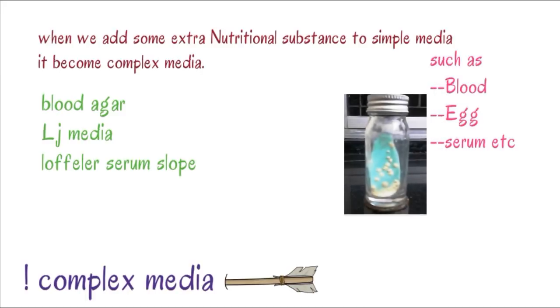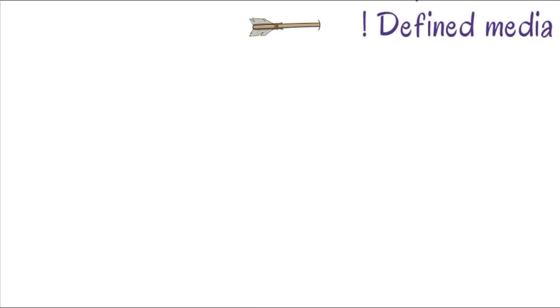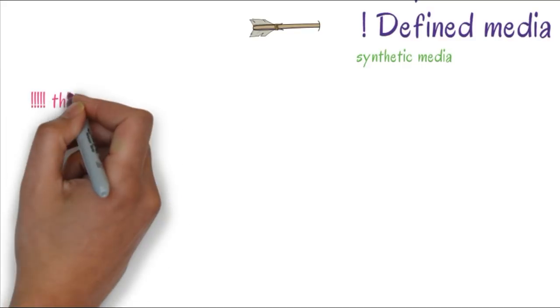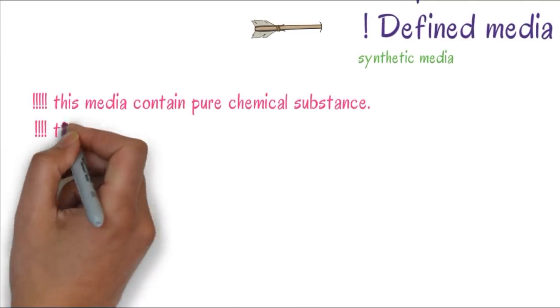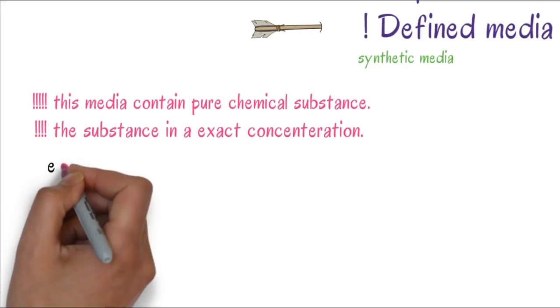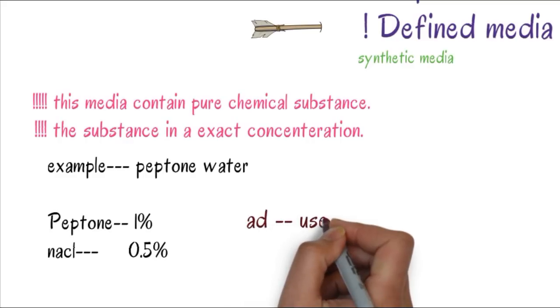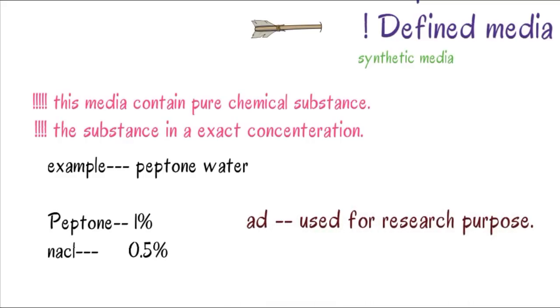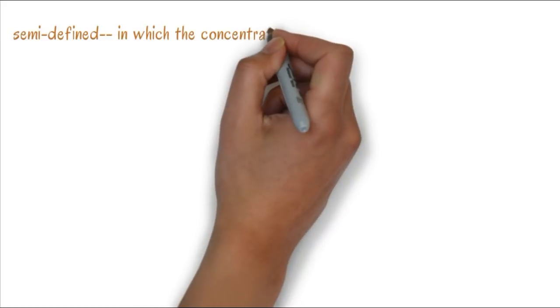Defined media, also known as synthetic media, is purely made of chemical substances. As the word defined suggests, the substances are in exact concentration. For example, peptone water contains peptone 1% and NaCl 0.5%. It's mainly used for research purposes. Semi-defined media has approximate, not exact, concentrations.